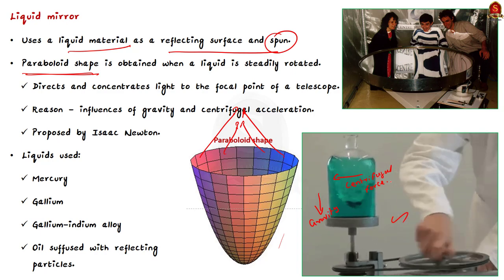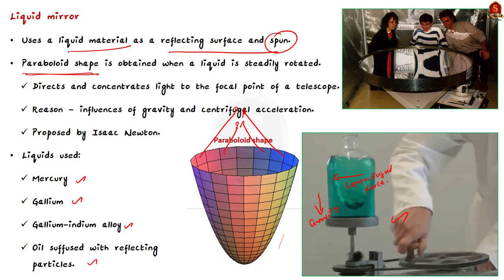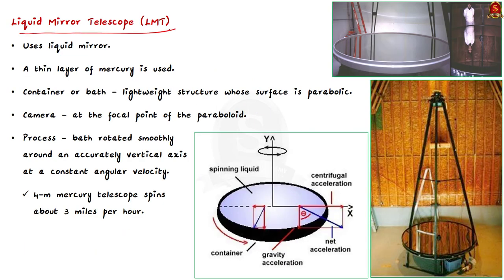This principle was first realized by Sir Isaac Newton. Now, what liquid is used in these types of telescopes? Since the liquid needs to be a mirror, it should reflect light. So liquids like mercury, gallium, gallium-indium alloy, or oil infused with reflecting particles are commonly used. When this liquid mirror is used in telescopes, it is called the liquid mirror telescope. Majorly, mercury is used as the reflecting liquid.